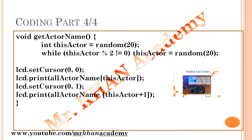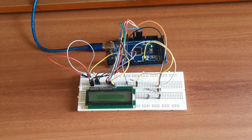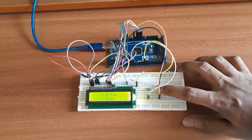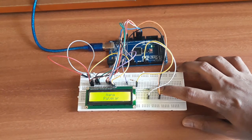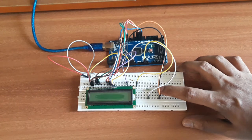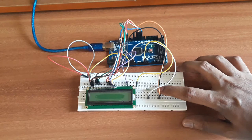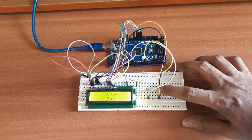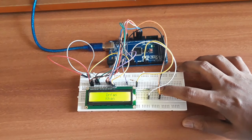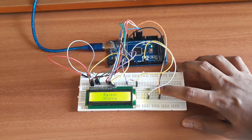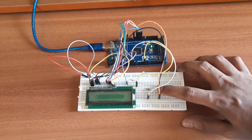Now let's check the demonstration. We've assembled the circuit as explained. When I press the push button, you can see the names are changing — right now it's showing 'Nana Patekar'. Pressing again, it's showing 'Dilip Kumar'. Now pressing again — 'Akshay Kumar', then 'Irfan Khan'. It's randomly showing actor names. This is all about the project: while pressing the push button, a random actor name is displayed on the LCD screen. The output is not fixed — it's random each time.